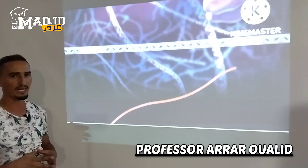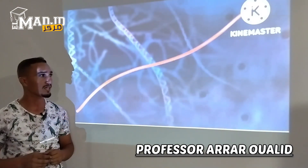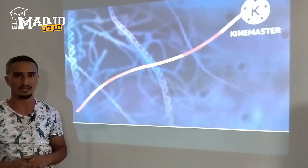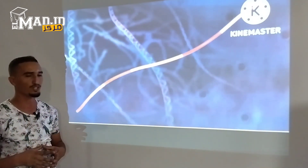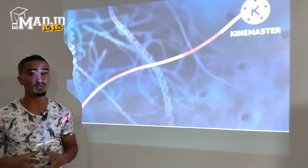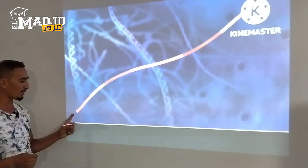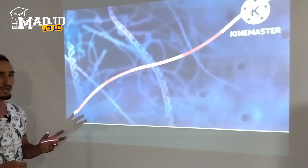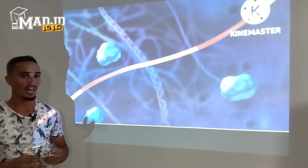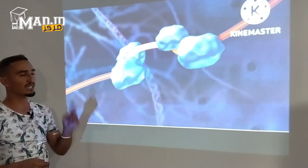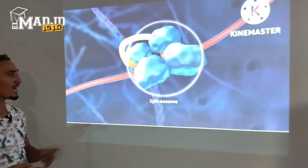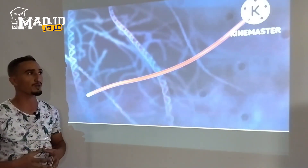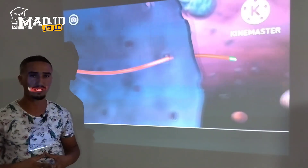The strand of messenger RNA made during transcription includes regions called exons that code for a protein, and noncoding sections called introns. In order for the messenger RNA to be used in translation, the noncoding introns need to be removed. Modifications such as a five prime cap and three prime poly-A tail are added. This process is called intron splicing and is performed by a complex made up of proteins and an RNA called the spliceosome. This complex removes the intron segments and joins the adjacent exons to produce a mature messenger RNA strand that can leave the nucleus through a nuclear pore and enter the cytoplasm to begin translation.